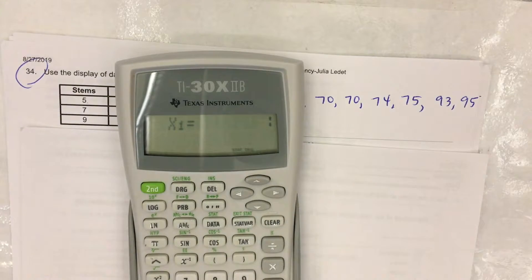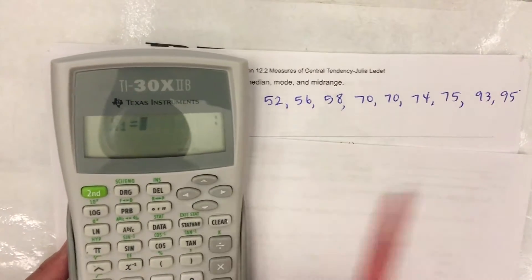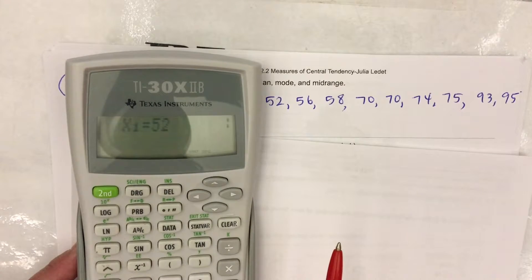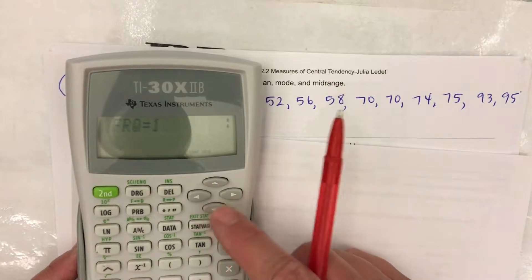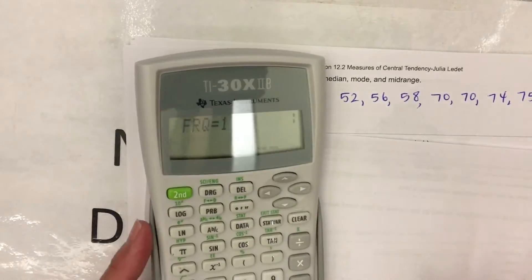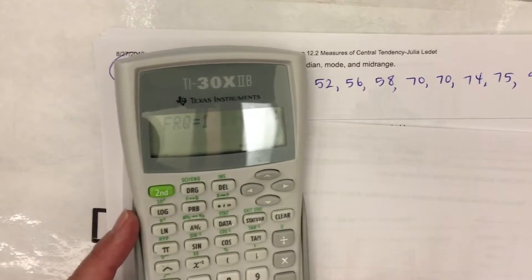X number one. The first data value is 52. Put that in. You can press equals or we can scroll down. It says frequency. The default is one. That question is how many times does 52 occur? Well, it's one time.